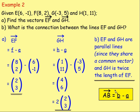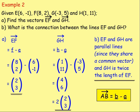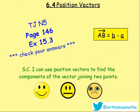Just remember, to work out AB, it's B take away A. That's the main thing to take from this lesson. If you're 100% okay with that, try some of these questions. They are in the TJ National 5 book, page 146, Exercise 15.3. As usual, check your answers as you go. Make sure you're getting this right. And if you are, there's a high five for you!